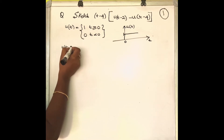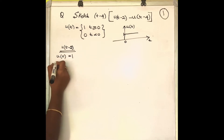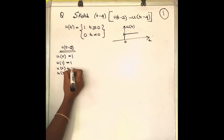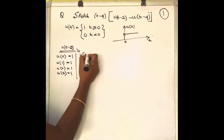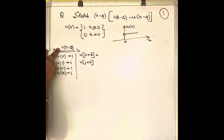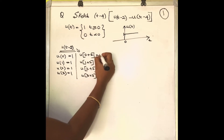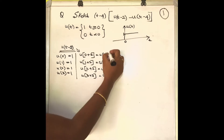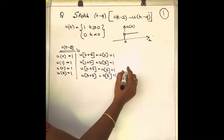Now for u(t minus 2): write down all possible values. u(0) has amplitude 1, u(1) has amplitude 1, and so on. For u(t minus 2), you delay the signal by 2, so u(0) becomes u(0+2), u(1) becomes u(1+2), giving you u(2), u(3), u(4), u(5). The amplitude remains the same — there is no change in amplitude. This is the new instance obtained.